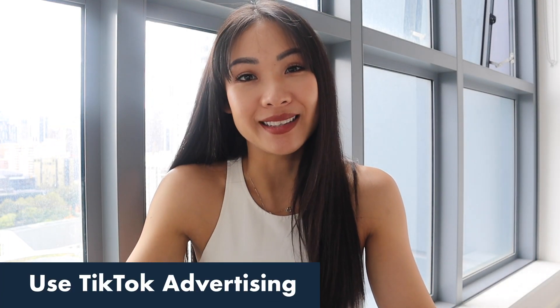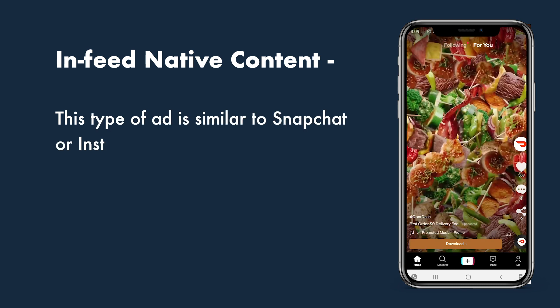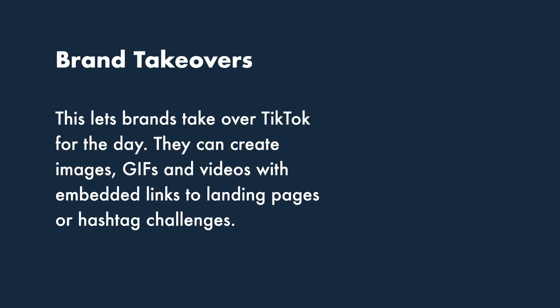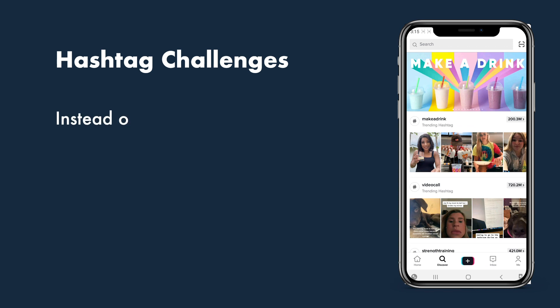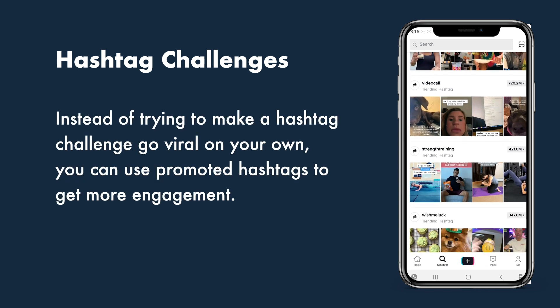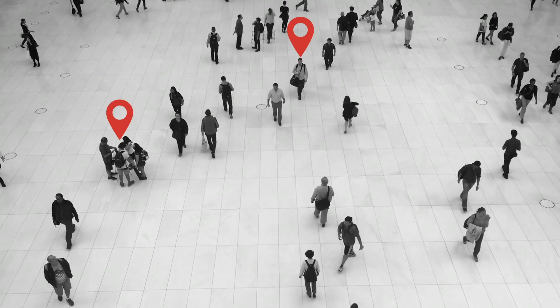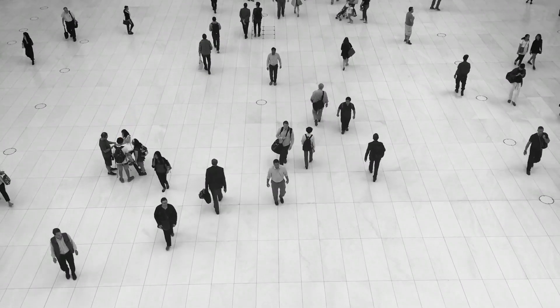Take advantage of TikTok advertising. TikTok has finally introduced ads onto the platform and offers four different types. First, in-feed native content — similar to Snapchat or Instagram story ads — supports multiple features like web clicks or app downloads. Second, brand takeovers let brands take over TikTok for the day, creating images, GIFs and videos with embedded links to landing pages or hashtag challenges. Third, hashtag challenges — instead of trying to make a hashtag go viral on your own, you can use promoted hashtags to get more engagement. Fourth, branded lenses, which are like Snapchat's 2D and 3D lenses for face and photos. TikTok also offers precise targeting so your ads go to the exact users that would be interested in what you have to offer.